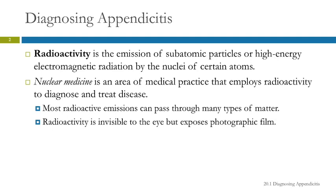Most radioactive emissions can pass through matter, so we can use them to take pictures — to image things that are inside your body. We can't see radioactivity, but we can detect it with something like photographic film.